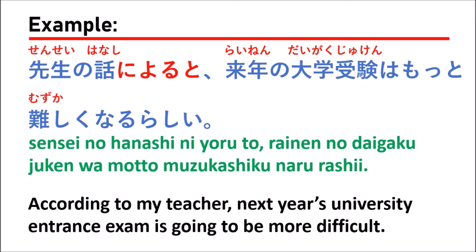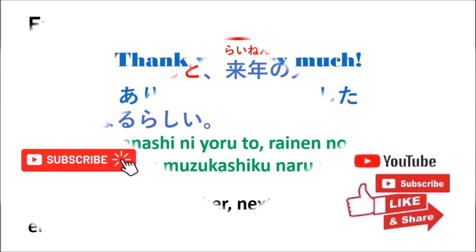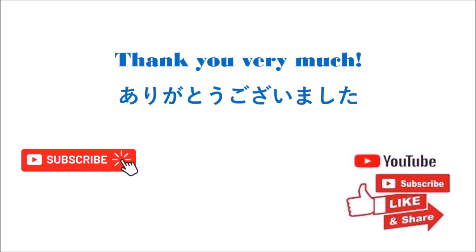So, when you use ni yoru to or ni yoreba, that means you have some information from somewhere. You use that information to show something that is likely to happen. You have believable information from somewhere, and you can share that information with the person you want to tell, then say the next sentence about what will happen. Thank you very much for watching. Please subscribe to my channel if you haven't. I hope to see you for learning Japanese next time. ありがとうございました。